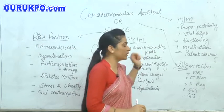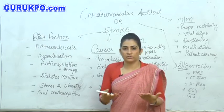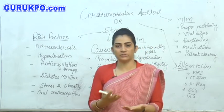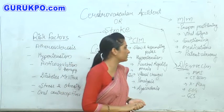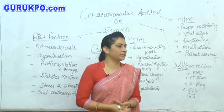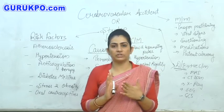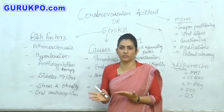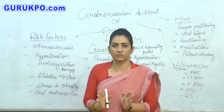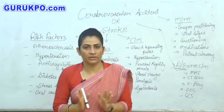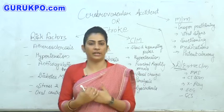Next one is medication. We would give thrombolytic medications, coagulative medications, antidepressants, and painkillers to relieve the pain — these medications we would provide to the patient. Next one is maintaining a patent airway. When any brain damage occurs, the patient undergoes oxygen depletion or hypoxemia. In this condition, we should maintain proper ventilation through the patent airway and with the ventilator.